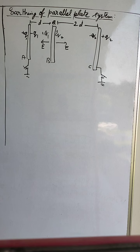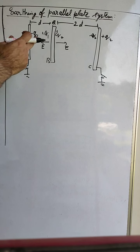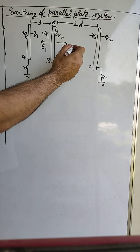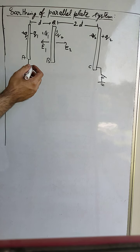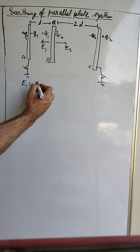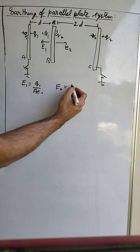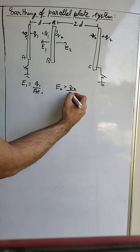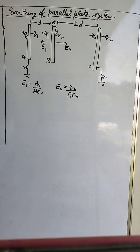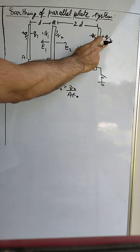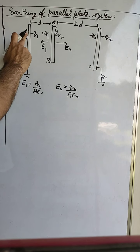When the switches are closed and A and C are connected to earth, E1 = Q1/(Aε₀) and E2 = Q2/(Aε₀). The charges +Q1 and +Q2 on the outer surfaces will flow to earth, and the final charge on the outer surfaces will be equal to zero, as we studied in the previous video.